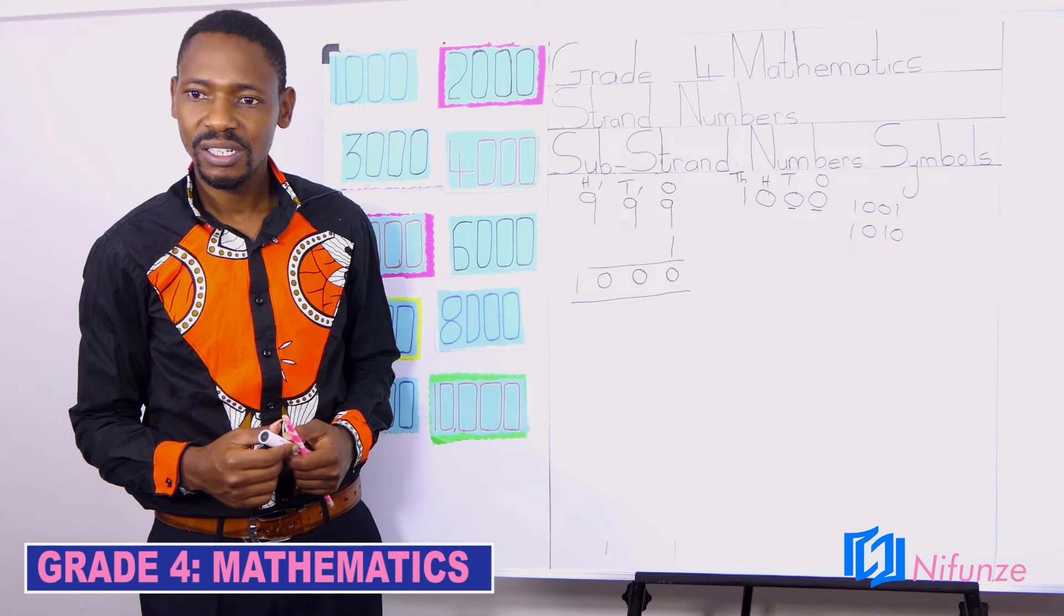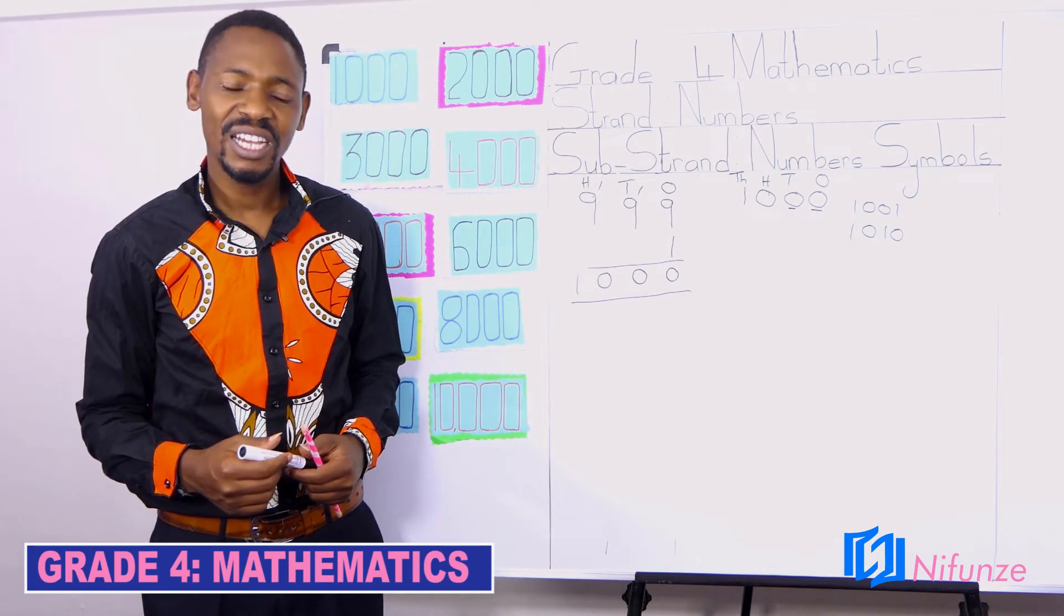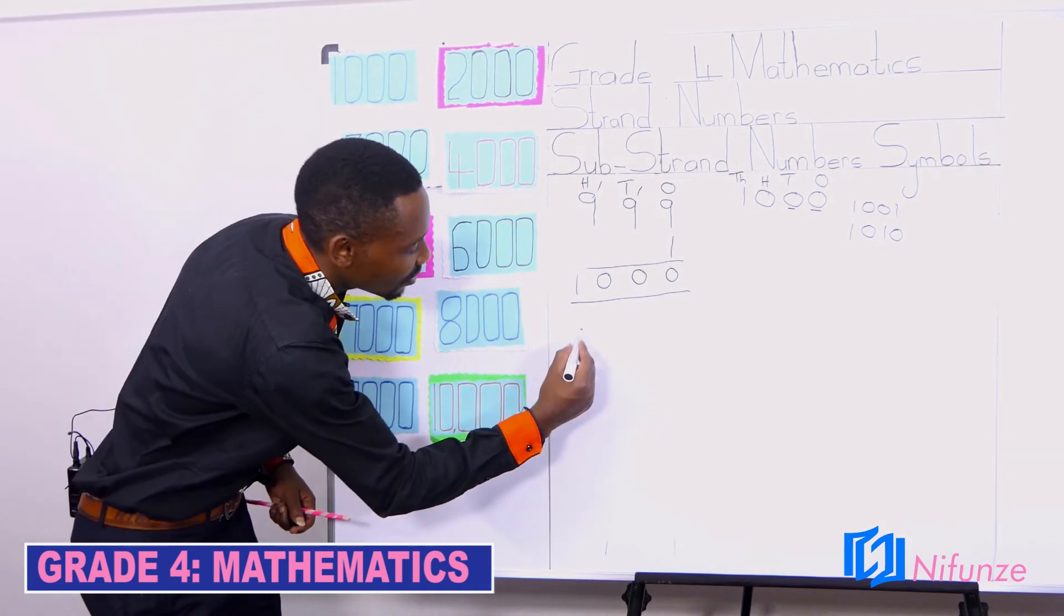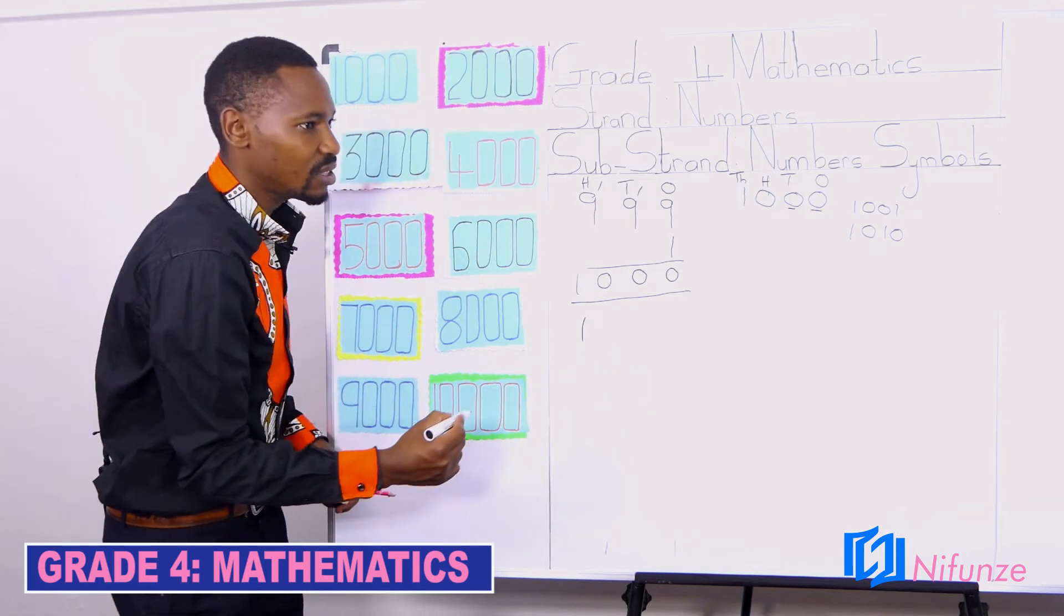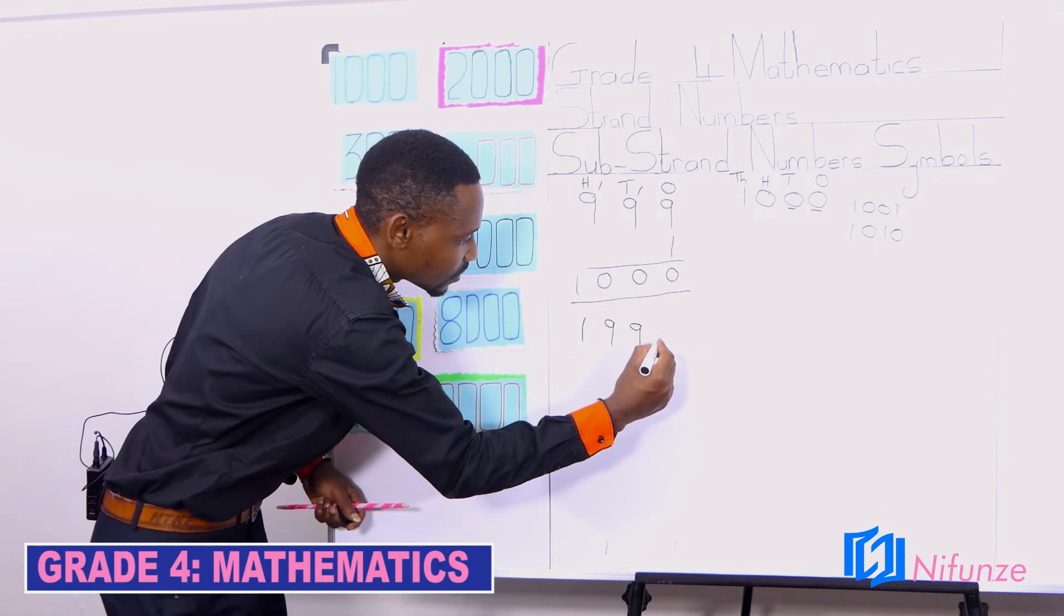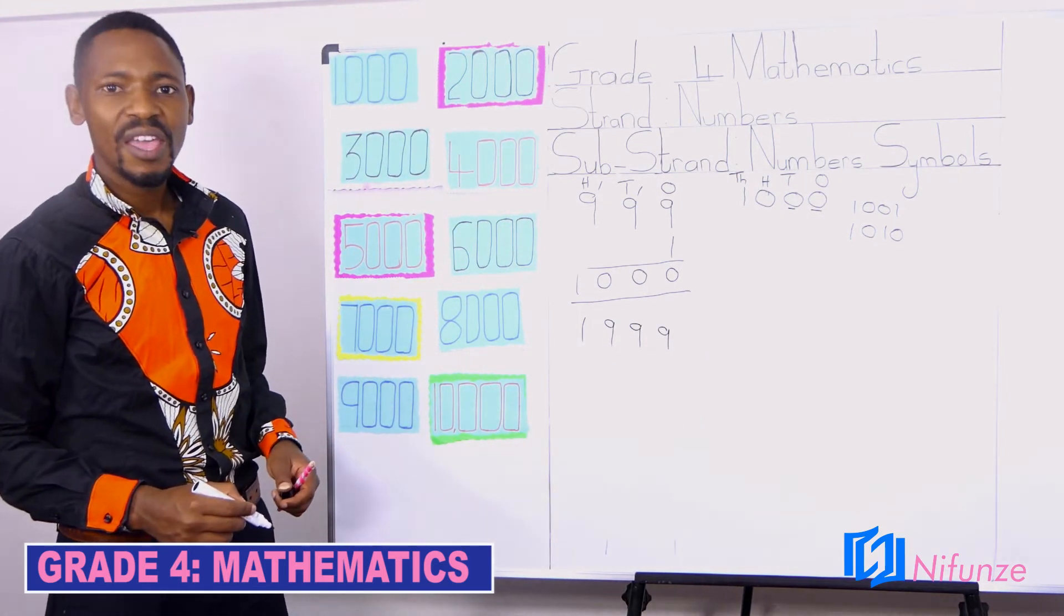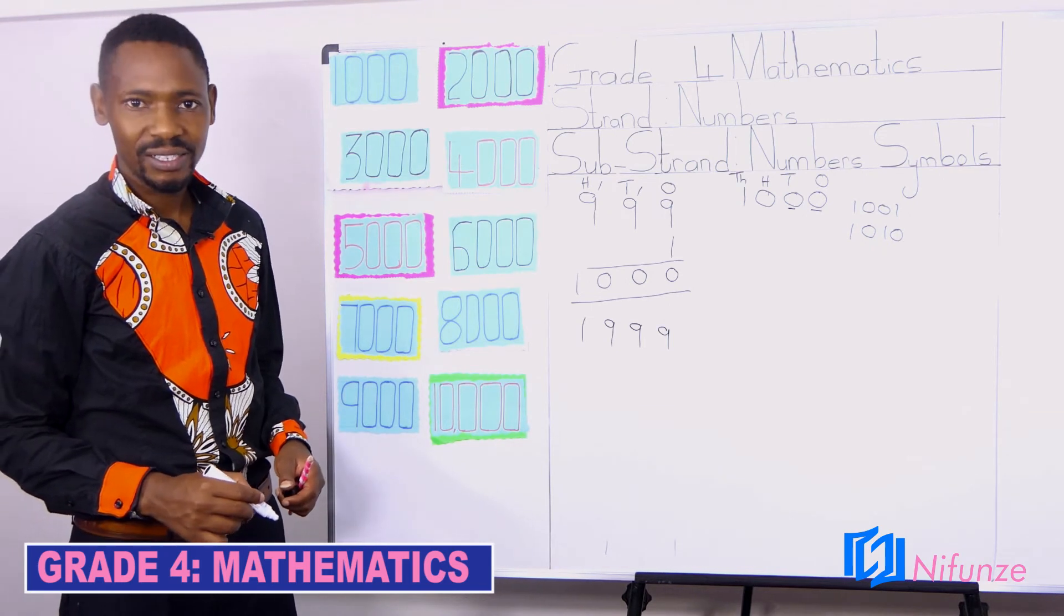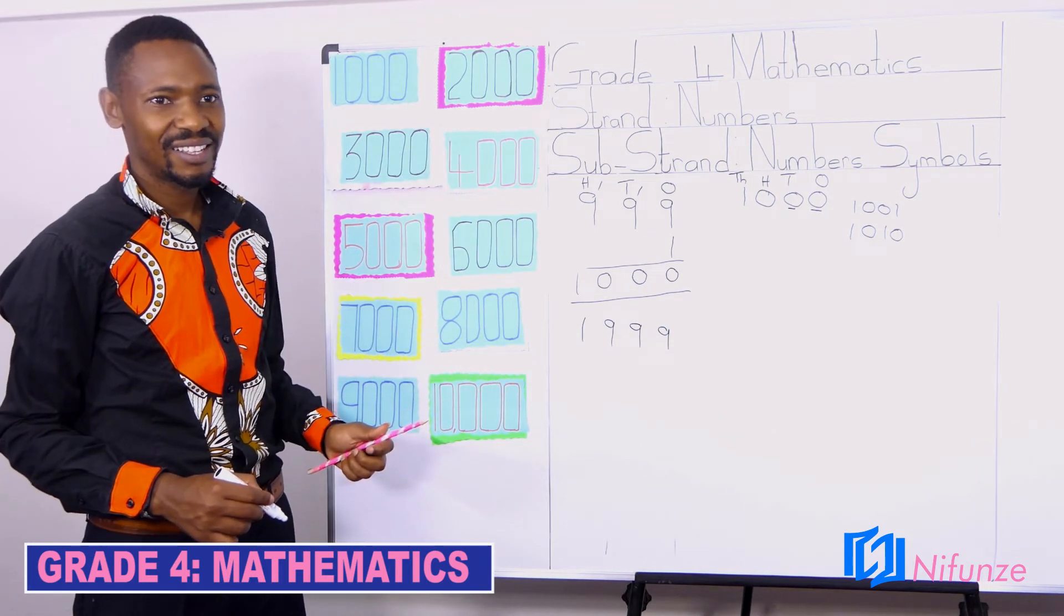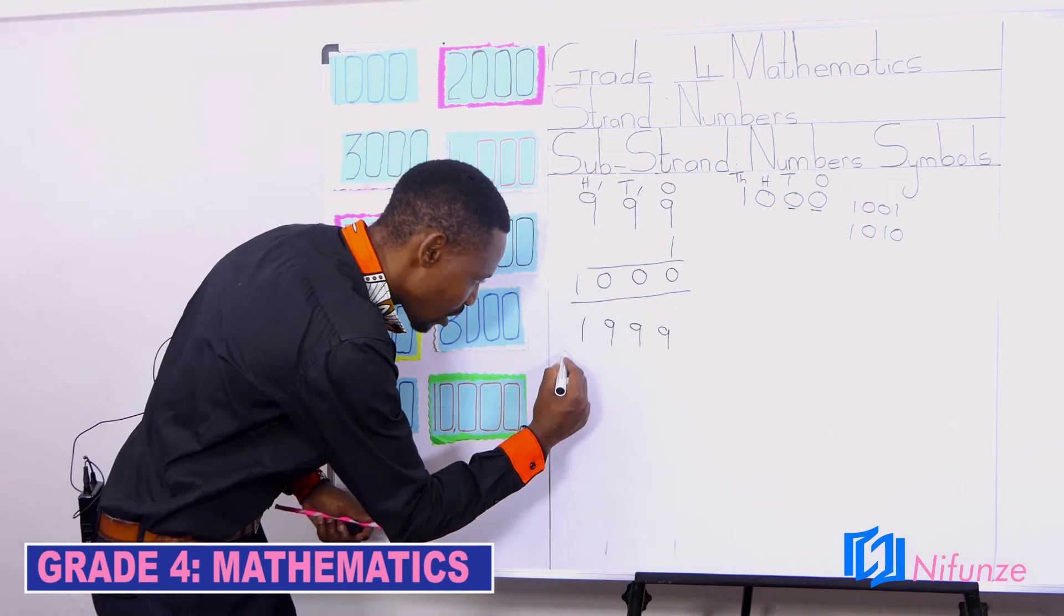1,999. Which number is that? I am saying 1,999. When you have that number, then you add 1, that's when we shall arrive to 2,000. Yes, I mean like this, plus 1.